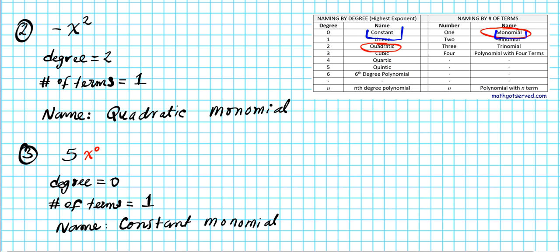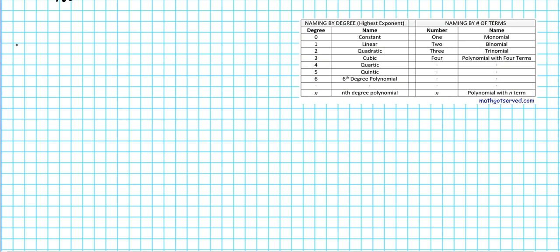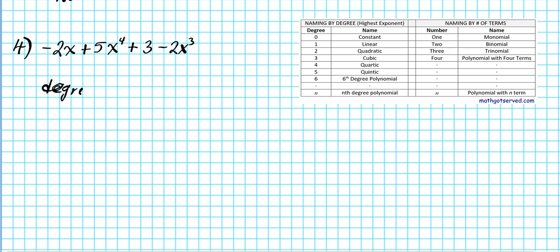Example four: negative 2x plus 5x to the 4th plus 3 minus 2x to the 3rd. Note that this polynomial is not in standard form, so don't assume the first term determines the degree. You must inspect every term. The degrees of the terms are 1, 4, 0, and 3. The highest degree is 4.